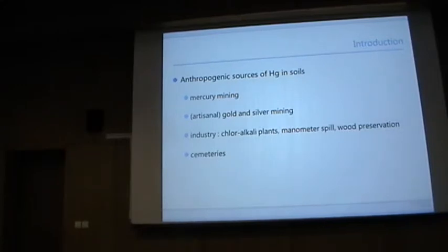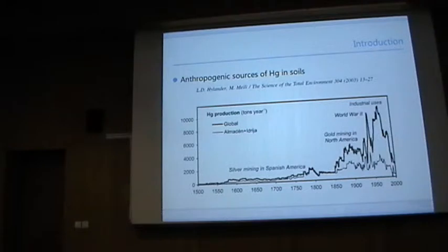The project was concentrated on contaminated soils by anthropogenic origins. This comes into the soil by mercury mining, gold and silver mining in an artisanal way, and during the last century also by different industries, especially the chloro-alkali plants are very important. Also some manometer spills, wood preservation industry, few floors, tanneries—they also sometimes use mercury. And then there is also cemeteries from dental fillings. This is just an overview of how the mercury production evolves over the few centuries. But I think there is now almost complete ban on the use of mercury because it's quite a hemotoxic element.